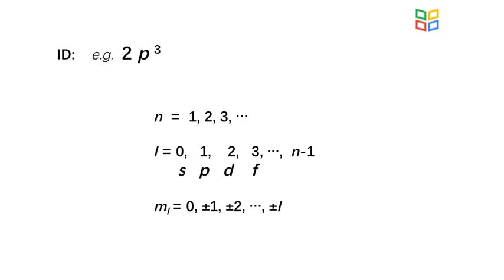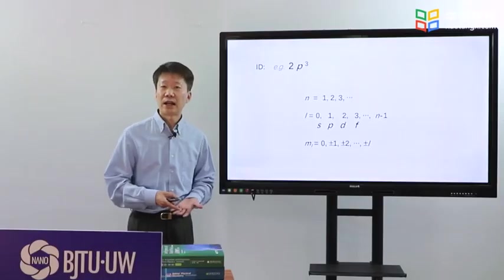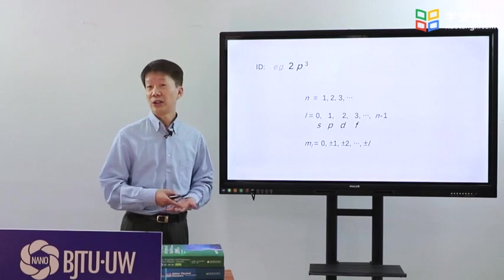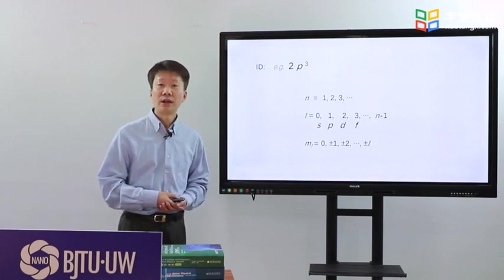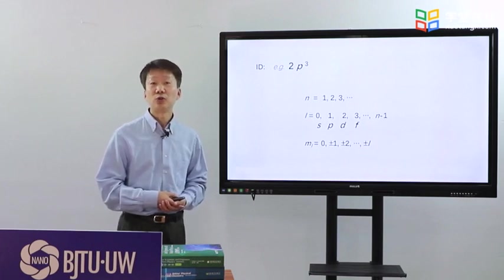We name the angular momentum quantum numbers with specific letters: S for 0, P for 1, D for 2, F for 3, etc. For example, three electrons with N is 2, L is 1 is denoted with 2P3.